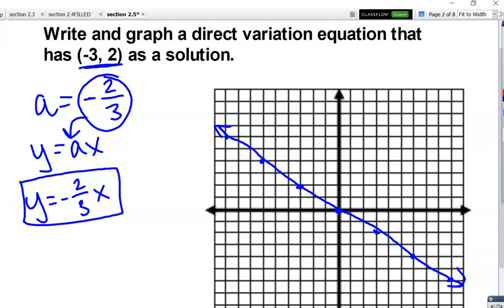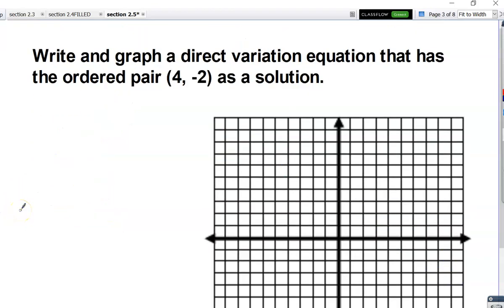And we'll try one more example like that. Again, all direct variation equations pass through the origin. This time we were given the ordered pair 4, negative 2. So we're going to go to the right 4, and then down 2. And then we're going to go right 4 again, down 2. And we can also, from the origin, go up 2 and to the left 4. The exact opposite direction that we just went in. And connect.